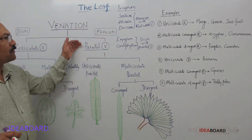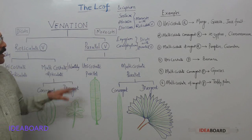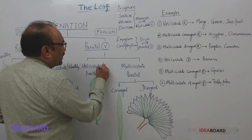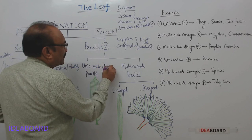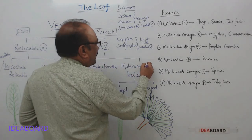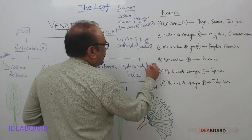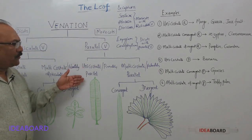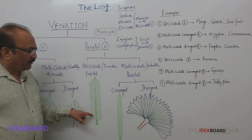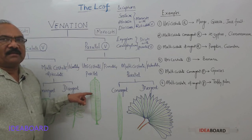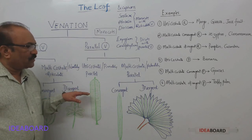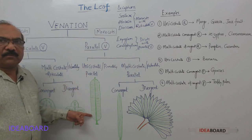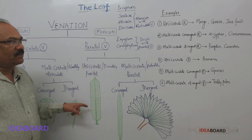Now, parallel venation also has two types: unicostate parallel (also called pinnately parallel) and multicostate parallel (also called palmately parallel). In unicostate parallel venation, there is one midrib from which many lateral veins arise — but they all run parallelly. The best example is the banana leaf.